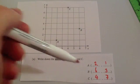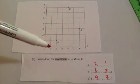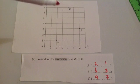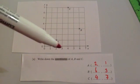It says write down the coordinates of A, B, C. So I've done that already. So A is two, one, two across, one up. B is six, three, six across, three up. And C is four, seven. Four across and seven up.